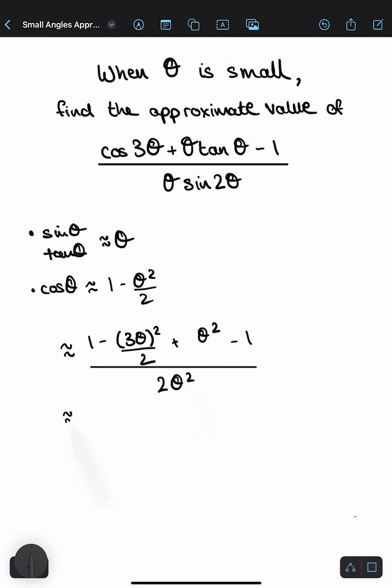And now let's simplify that. So 1 minus 1 goes away. So now you've got minus 9θ² over 2 plus θ² divided by 2θ².